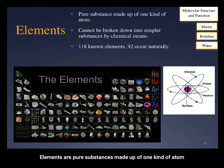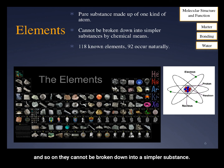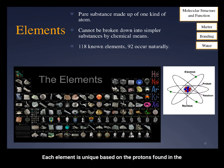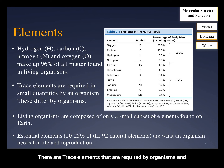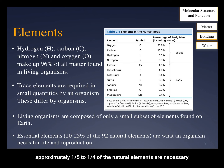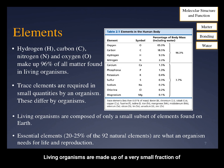Elements are pure substances made up of one kind of atom. Helium only has helium atoms, hydrogen only has hydrogen atoms, and so on. They cannot be broken down into a simpler substance. There are 118 known elements, and 92 of them occur naturally. Each element is unique based on the protons found in the atomic nucleus. Of the 92 naturally occurring elements, hydrogen, carbon, and nitrogen make up 96% of all matter found in living organisms. There are trace elements that are required by organisms, and these requirements differ for each species. Essential elements — approximately one-fifth to a quarter of the natural elements — are necessary for life and reproduction among organisms. Living organisms are made up of a very small fraction of elements.